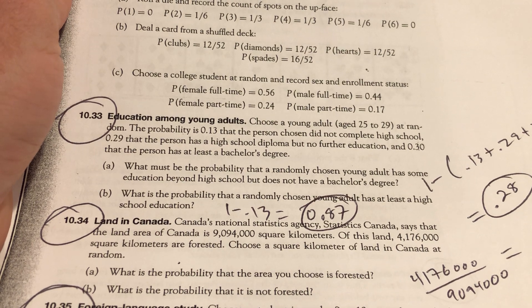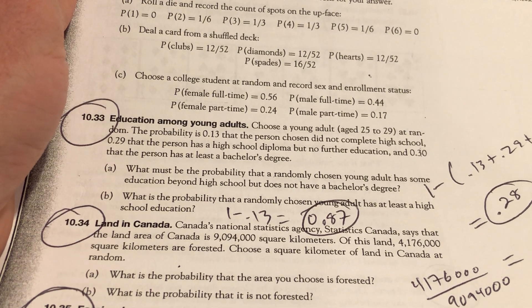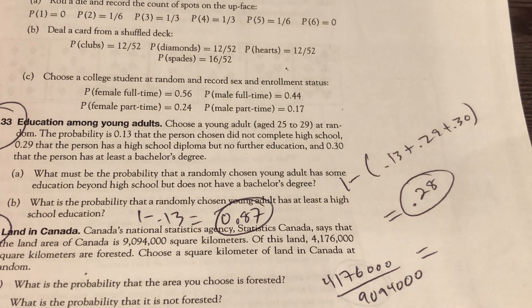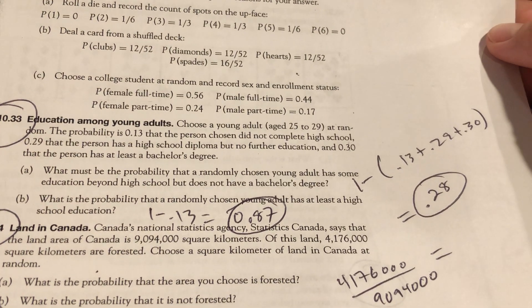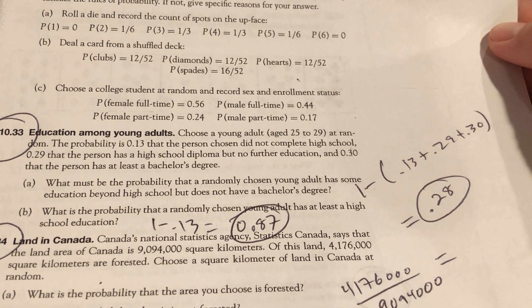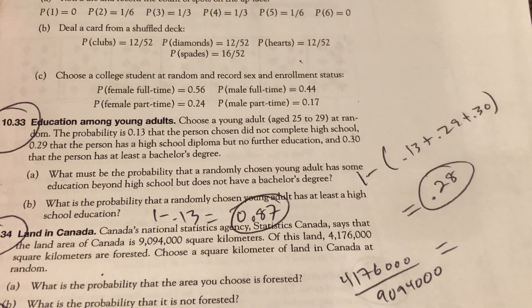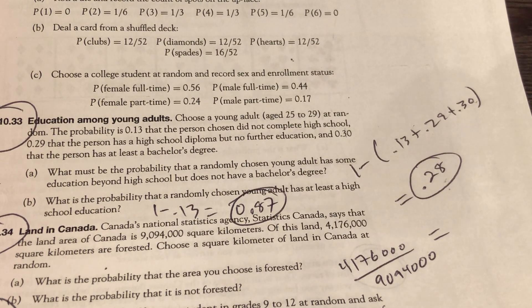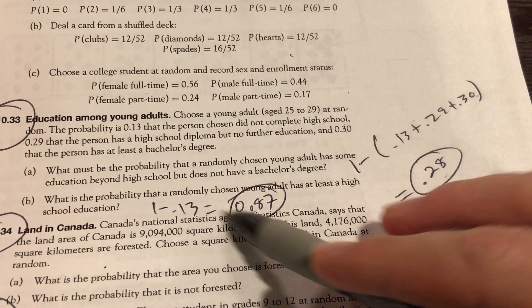What's the probability that you choose someone that has education beyond high school, but not a bachelor's degree? So that could be associate's degree, trade school. They might include people that attempted college, got a few credits, but did not complete either an associate's or bachelor's. And that's one minus all the probabilities you're given, 0.28. What's the probability that they have at least a high school degree? One minus 0.13.